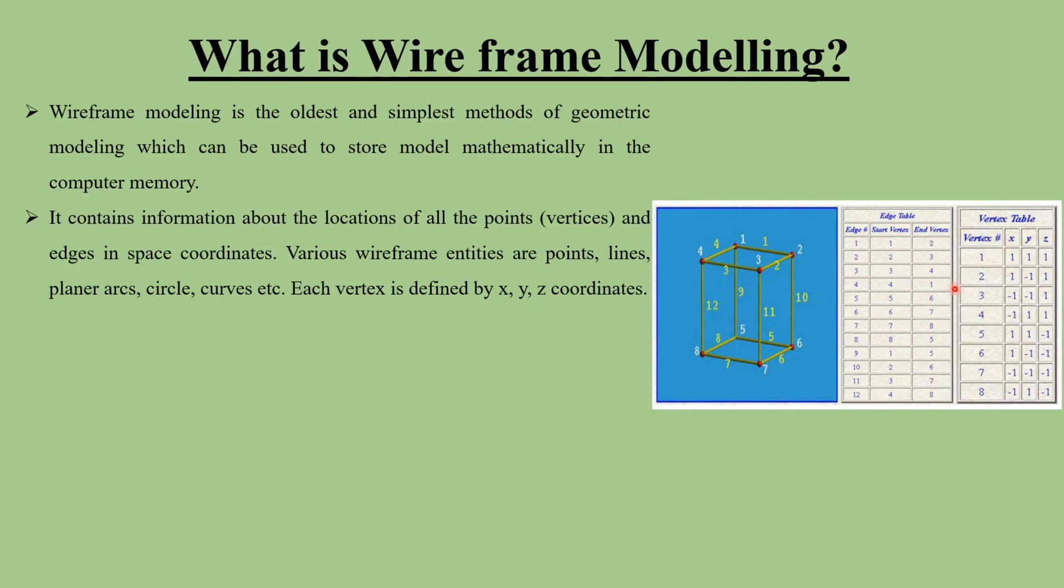Here you can see that in the vertex table, in the first column there are vertices 1, 2, 3, 4, 5, 6, 7, 8. So in this wireframe model, you can see the vertices are shown by the numbers 1, 2, 3, 4, 5, 6, 7, 8.